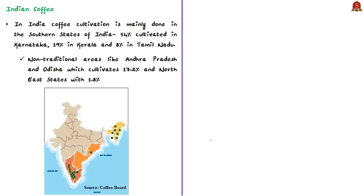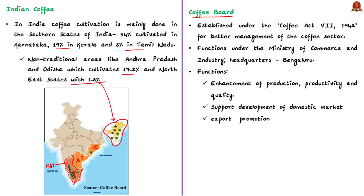In India, coffee cultivation is mainly done in the southern states. About 54% of coffee is cultivated in Karnataka, and the remaining traditional states, Kerala and Tamil Nadu, also cultivate coffee. Non-traditional areas like Andhra Pradesh and Odisha cultivate around 17% of Indian coffee, and some northeastern states also produce coffee. Commercial plantations were started by British entrepreneurs during the 18th century. For better management of the coffee sector, the Coffee Board was established in 1942 under the Coffee Act 7 of 1942. The Coffee Board functions under the Ministry of Commerce and Industry and is headquartered at Bengaluru, Karnataka.